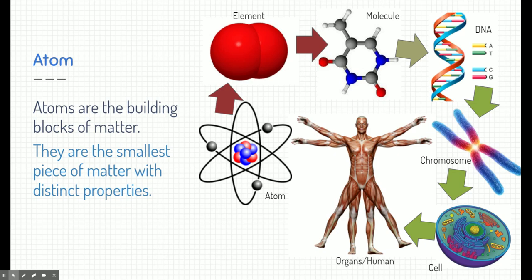So atoms are the building blocks of matter. Now atoms aren't the smallest piece of matter — they're just the smallest piece with distinct properties. We can find differences between different types of atoms, but we know that atoms are made of even smaller things: protons, neutrons, and electrons. There's no difference between one proton and another. In fact, protons and neutrons are even made of even smaller things called quarks, more recently discovered.